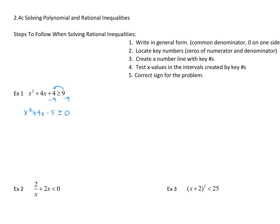Once it's set equal to 0, or greater than 0 — whatever — 0 is on this side, then I work to solve this for x. It's a trinomial, so I'm going to factor it. I know that x plus 5 times x minus 1 gives me this when I multiply it out. Then I set each one of these equal to 0 and solve it. So x equals negative 5, x equals 1. These are the key numbers.